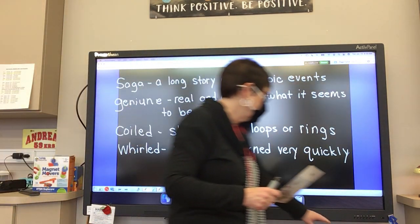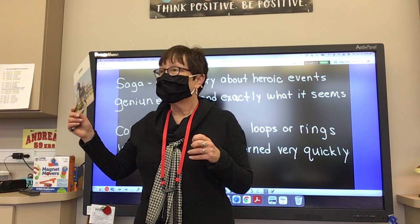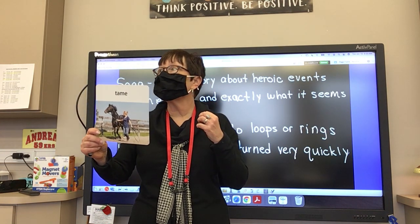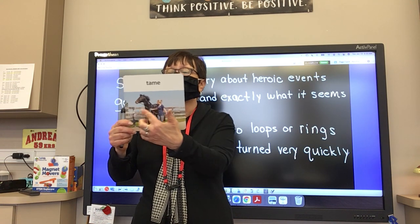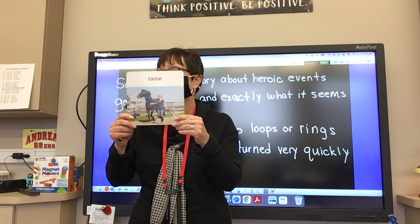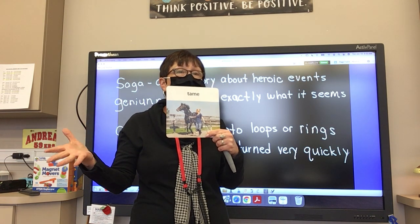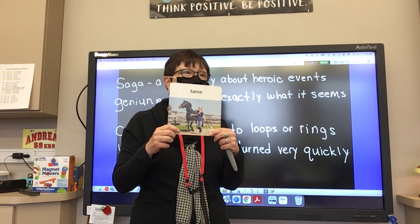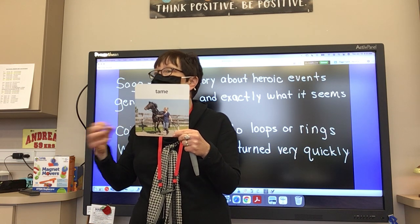Our last word is on the back of your page, and it is the word tame. Tame is a verb. Have you heard the word tame before? So when you tame something like a wild animal, you teach it to do what you want. Here's our sentence: the trainer's job is to tame the horses by teaching them to follow commands. If you go to the circus, they would tame the tigers and lions to do tricks. That's an example of taming — they tame them to do tricks. Or you tame your horse to follow directions so you can ride it; otherwise it would be wild.